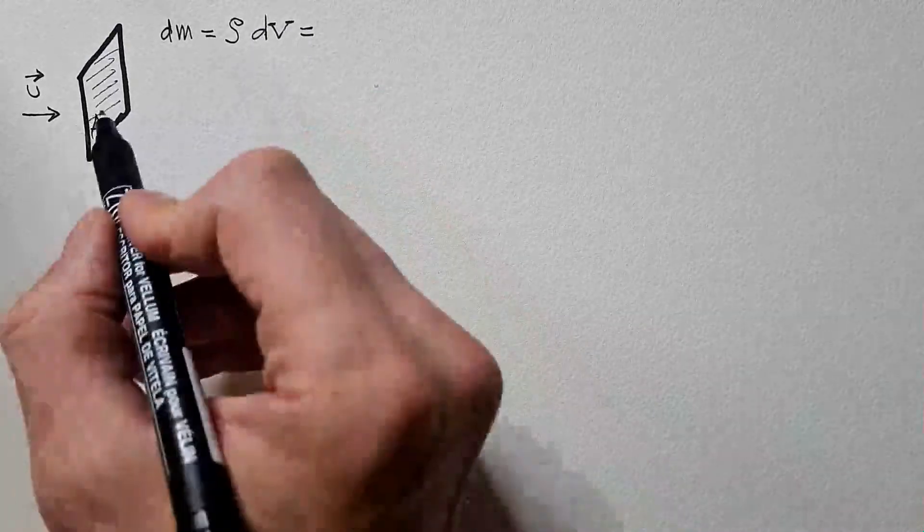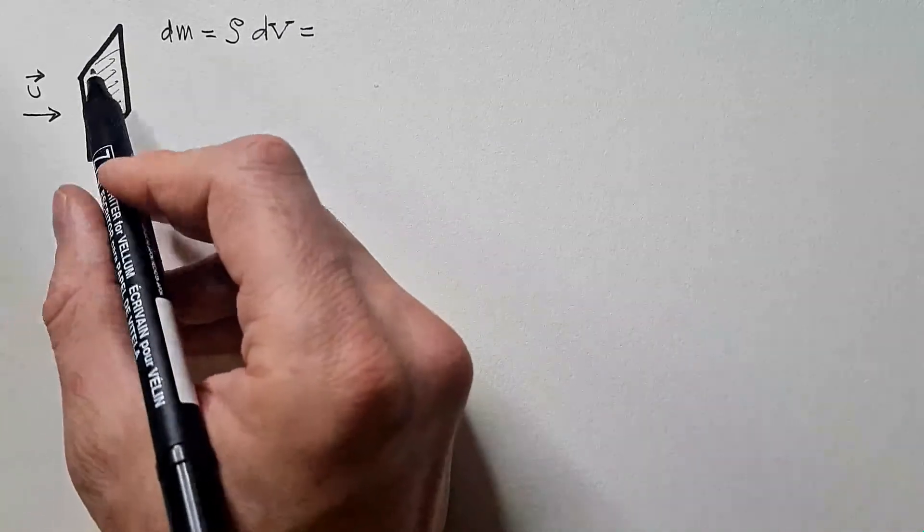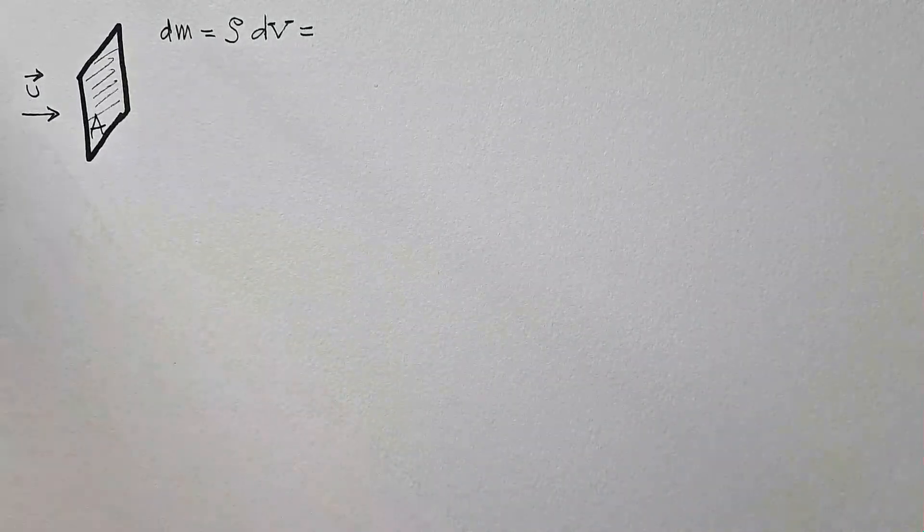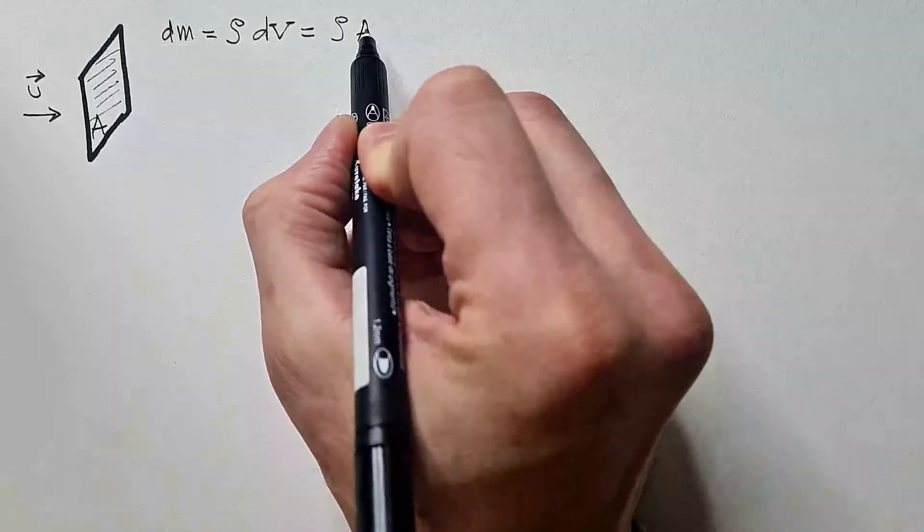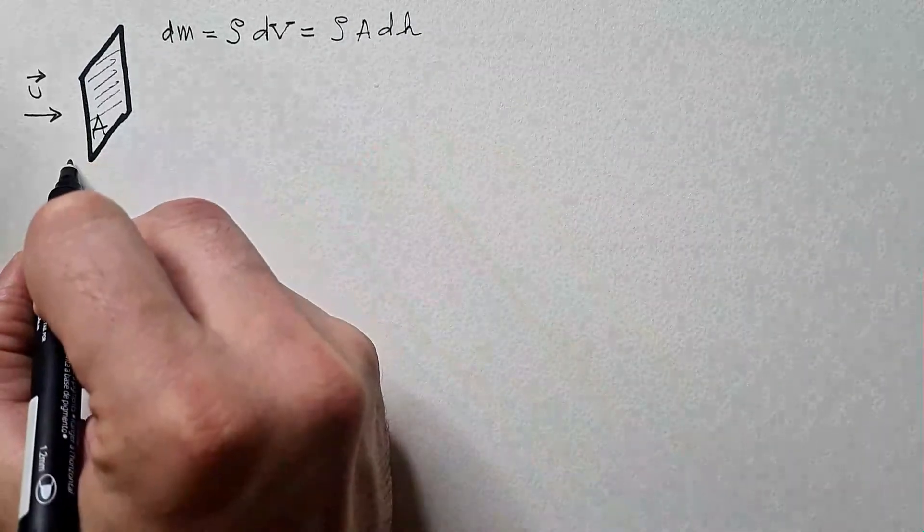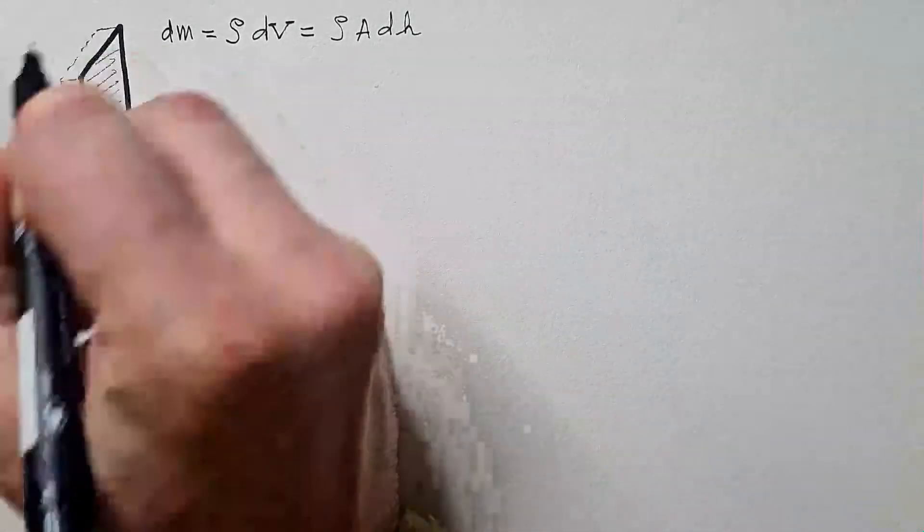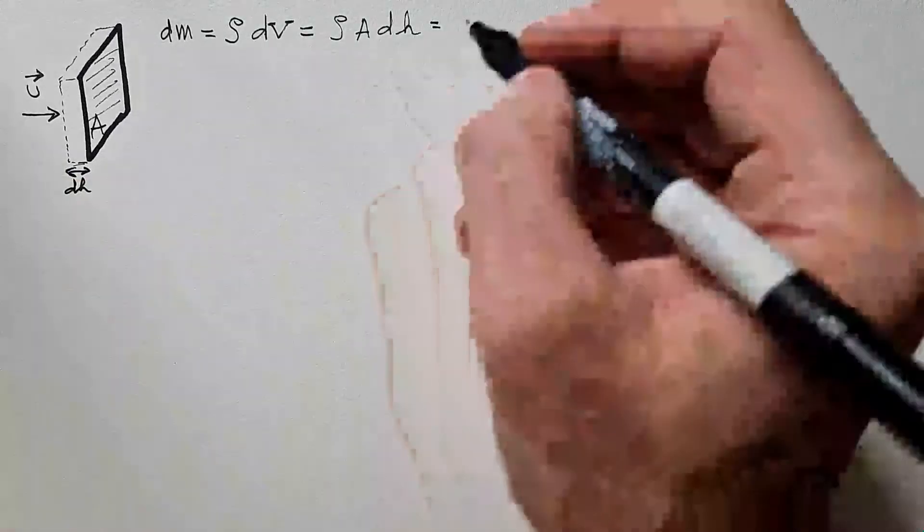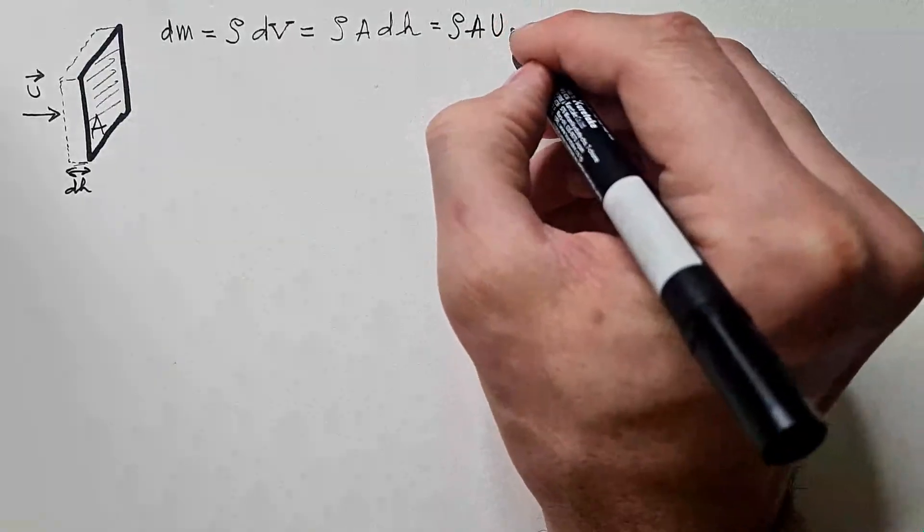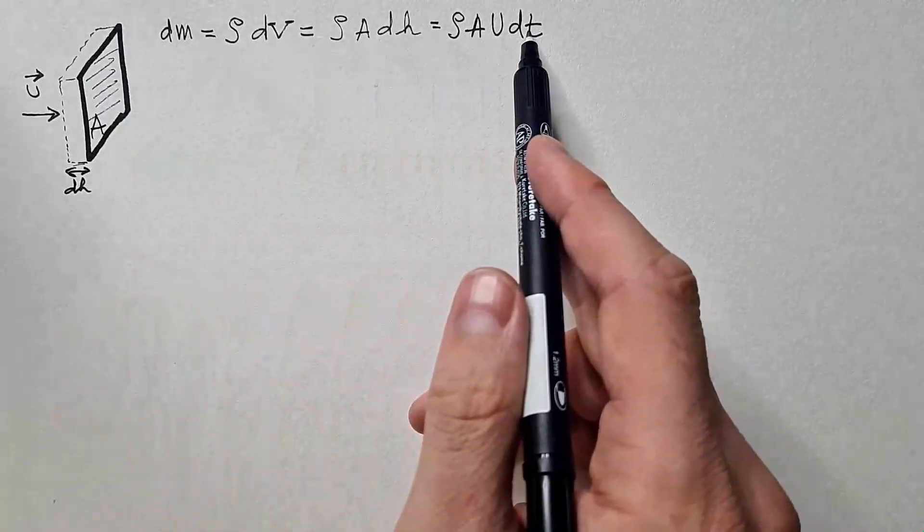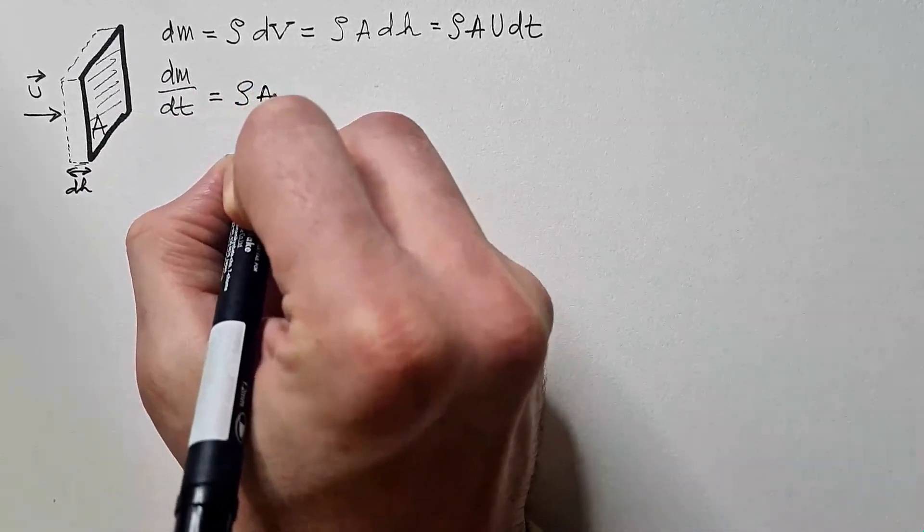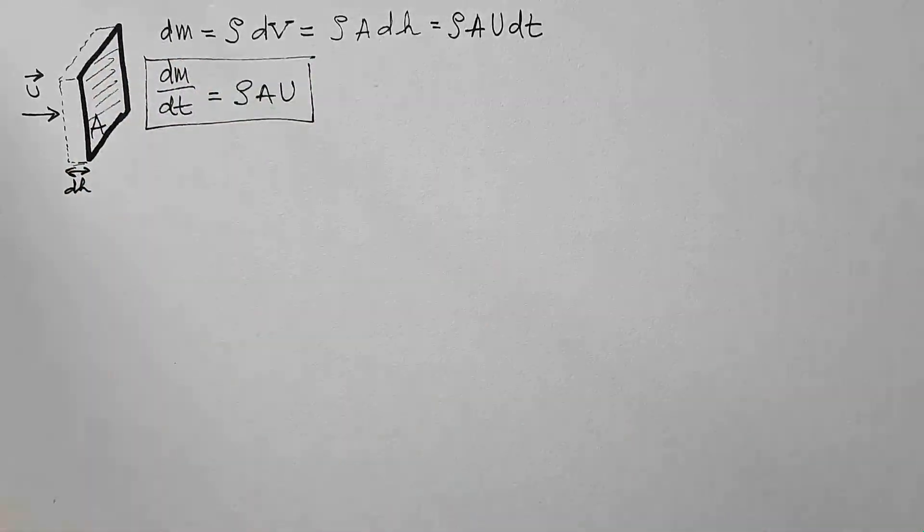But what is volume dV? That will be area A, which is not changing, times some distance that fluid particles pass in time dt having this velocity u. So it will be ρ times A times some distance, let's call it dH. That distance is something that fluid elements pass in time dt having this velocity u. So that is ρ A u dt. Dividing this equation with dt, I get that dM/dt is equal ρ A u. And this is called mass flow rate.